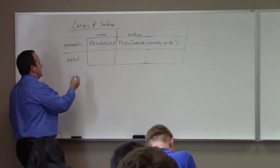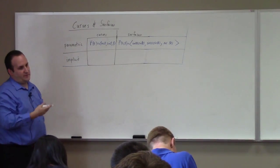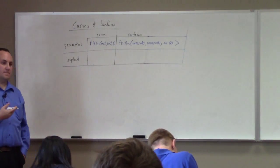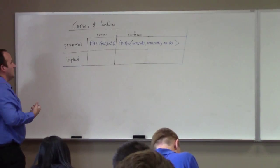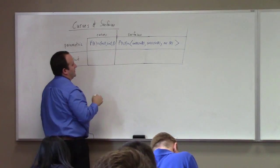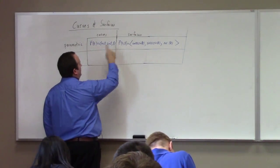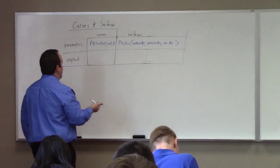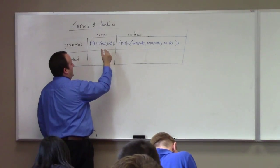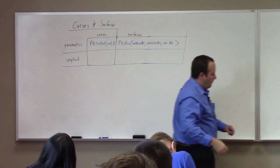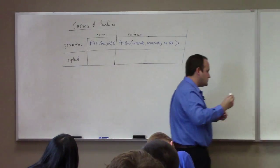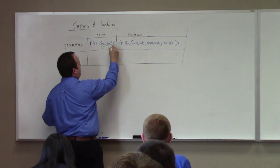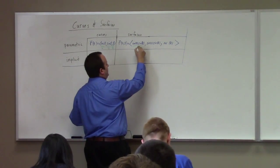The implicit viewpoint says you don't give a parameter for the object — you define it in terms of equations in X, Y, Z. The way to describe those same curves implicitly: this is X, this is Y, this is Z. You can check that if you look at those functions of time defined by X, Y, and Z, it's easy to prove that X squared plus Y squared equals what?